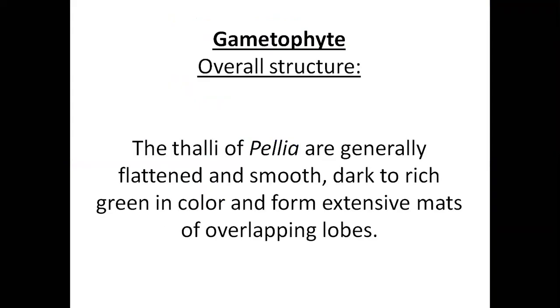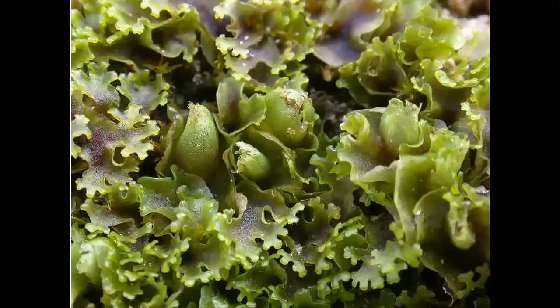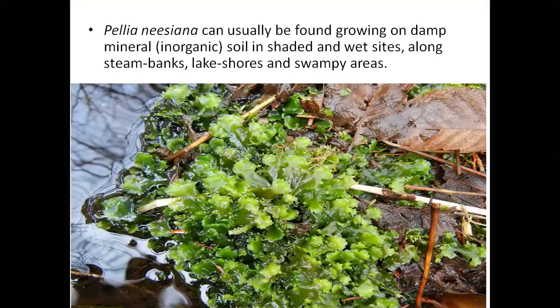These lobes overlap on each other — below one lobe is the next lobe, and then the next, forming an extensive mat of overlapping lobes. This is also the original structure. Look at this — it is near the water; the picture is very close up showing they are still alive. This is the Pellia structure.